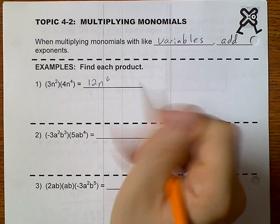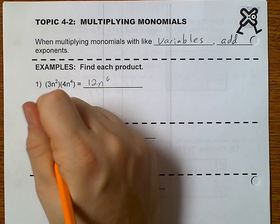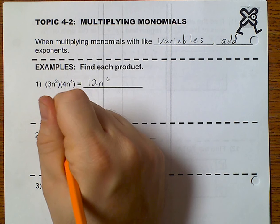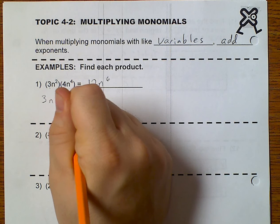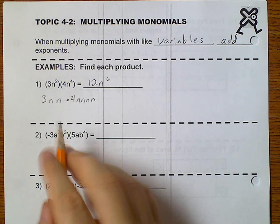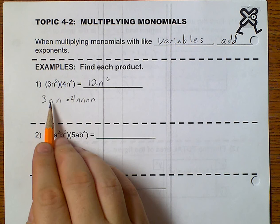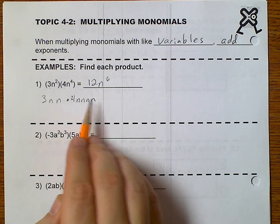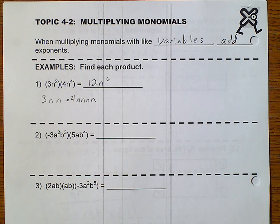Now, the reason that works is this is really 3nn times 4nnnn. And 3 times 4 gave me 12. And I have 1, 2, 3, 4, 5, 6 n's. So, that's n to the 6th.